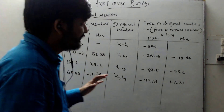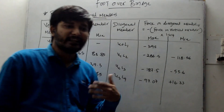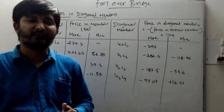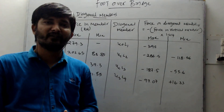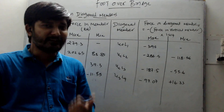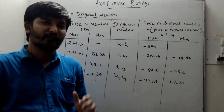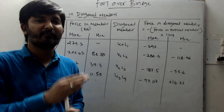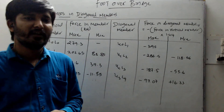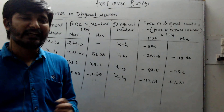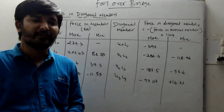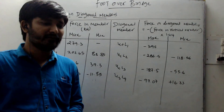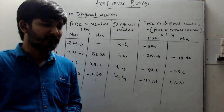In the next session, we will start with the design of the top chord member, bottom chord member, vertical members, and inclined members using IS 800-2007. Thank you for watching — keep learning and keep practicing.